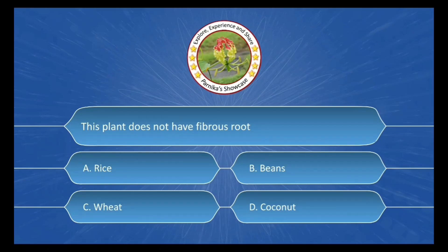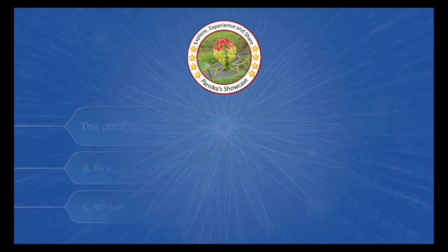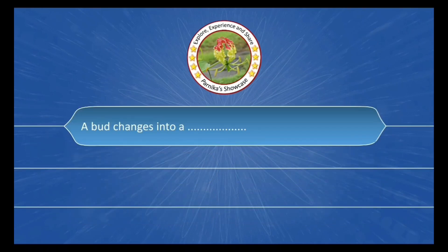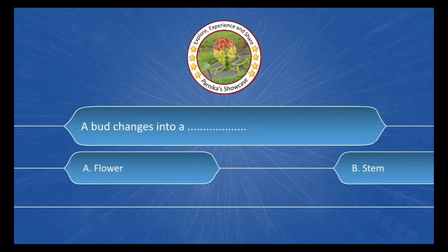Next question: This plant does not have a taproot. The options are: A. Rice, B. Beans, C. Wheat, D. Coconut. The correct answer is Option B: Beans.